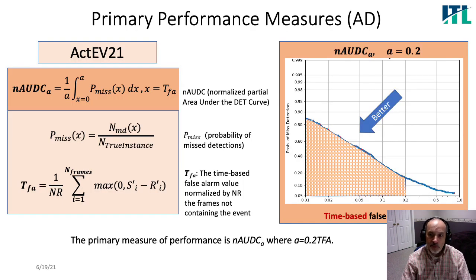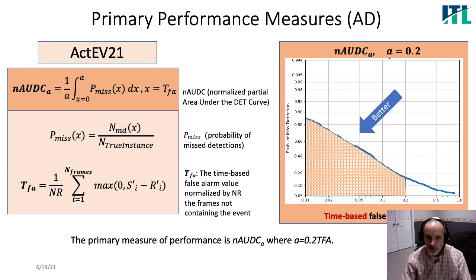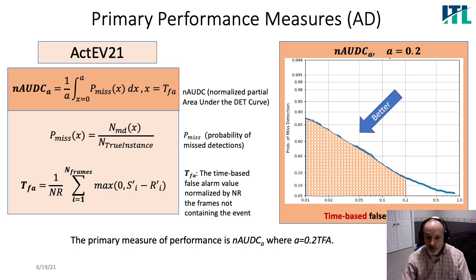The primary measure of performance for ACTDV is the normalized area under the DET curve. The DET curve is formed by calculating the missed detection probability and the time-based false alarm probability at every point in the detection confidence interval space. We take the integral under this curve up to a point of 0.02 and normalize that by the total area up to 0.02. I will defer details of this metric to the evaluation plan.